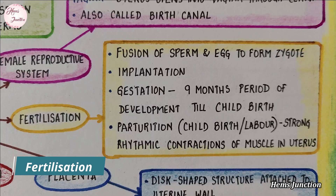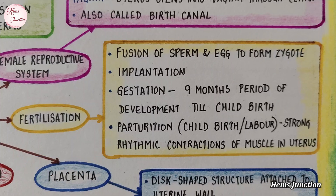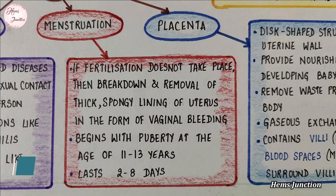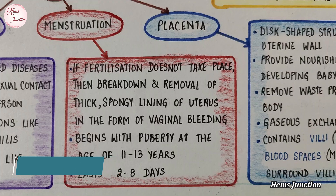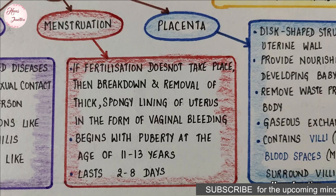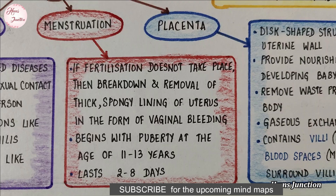Fertilization is the fusion of sperm and egg. If fertilization does not take place, then the thick spongy lining of the uterus slowly breaks and comes out through the vagina as blood. This cycle takes place every month and is known as menstruation. It usually lasts for about 2–8 days. Menstruation begins with puberty at the age of 11–13 years.